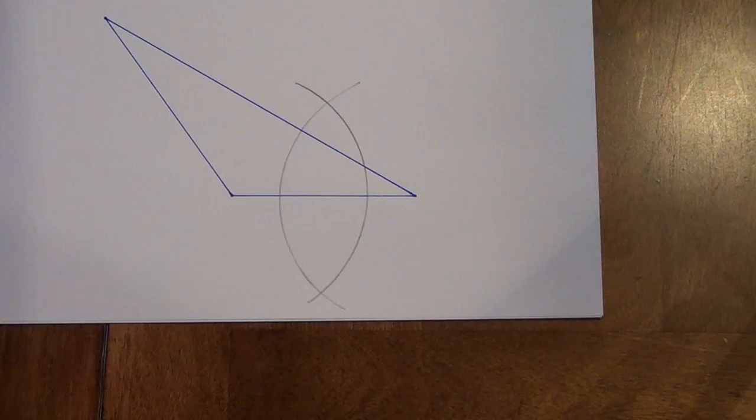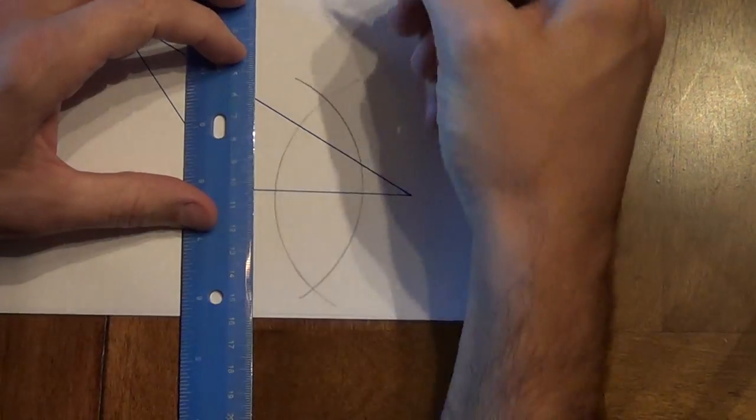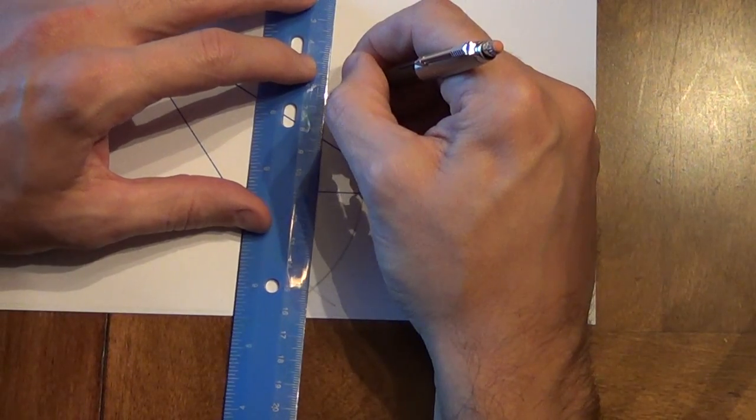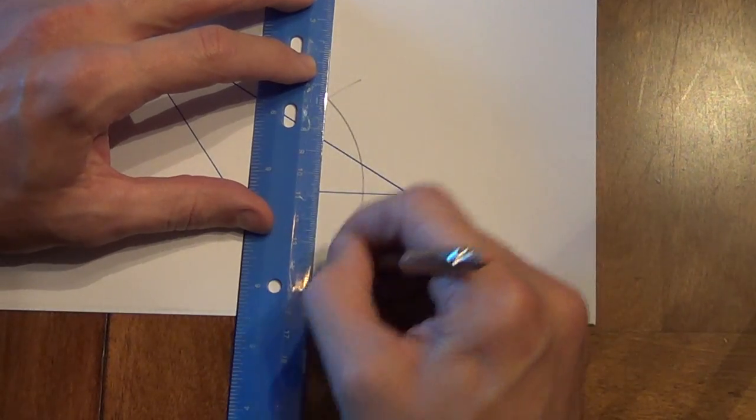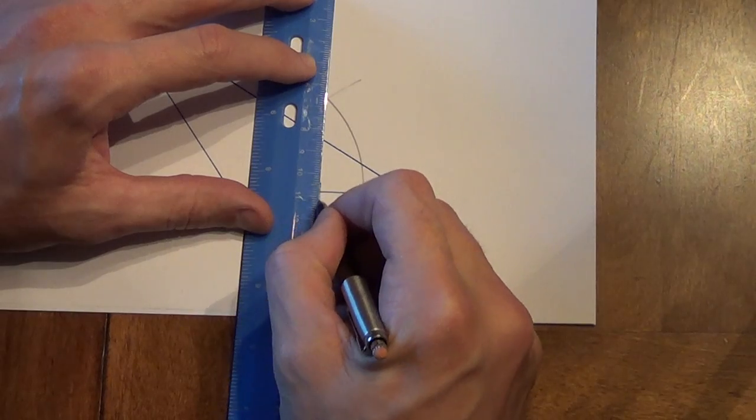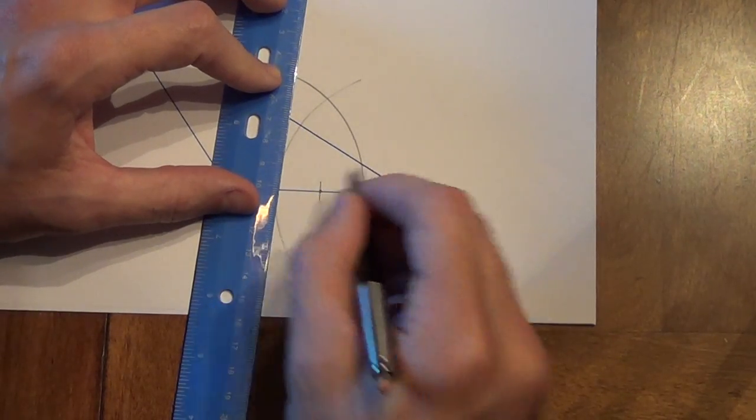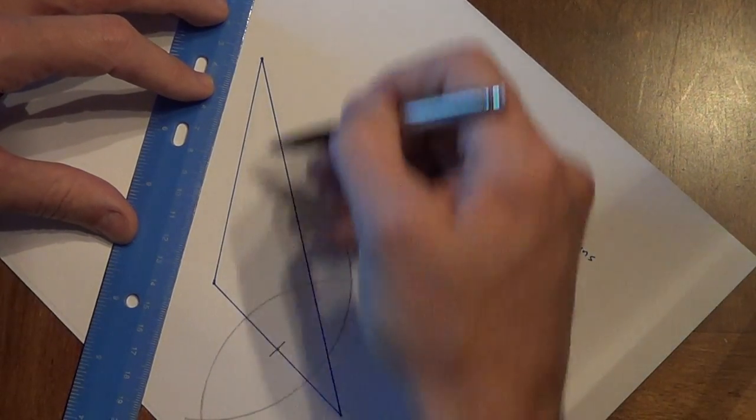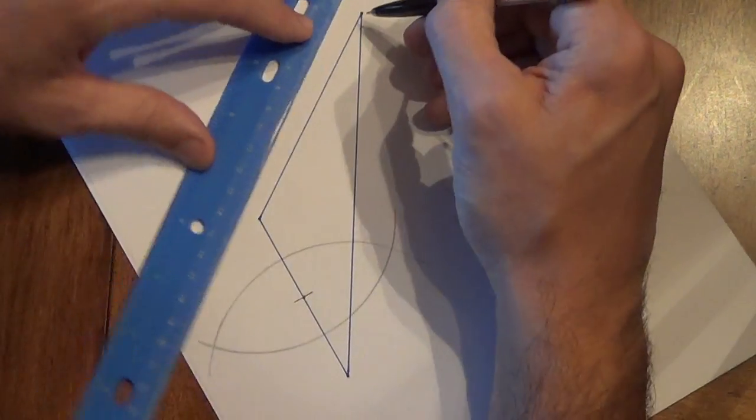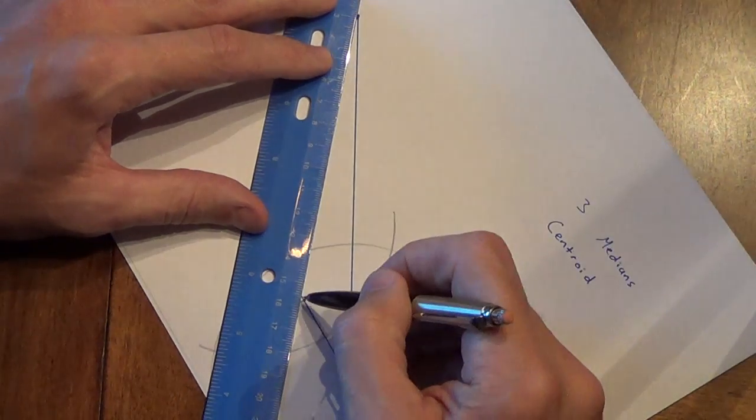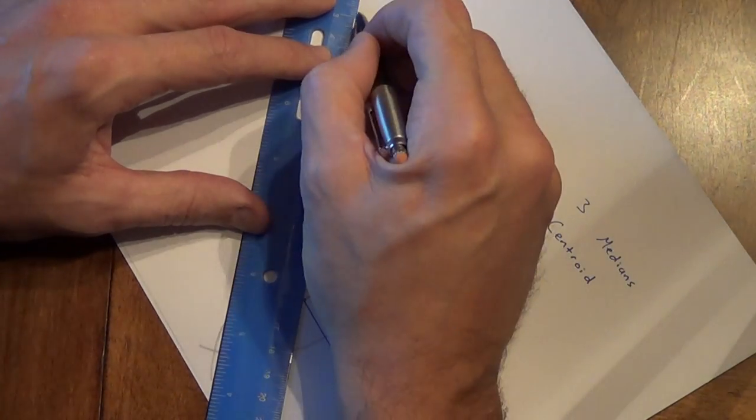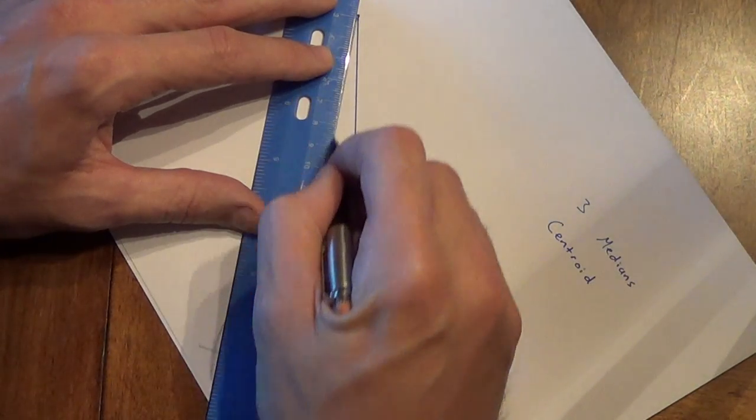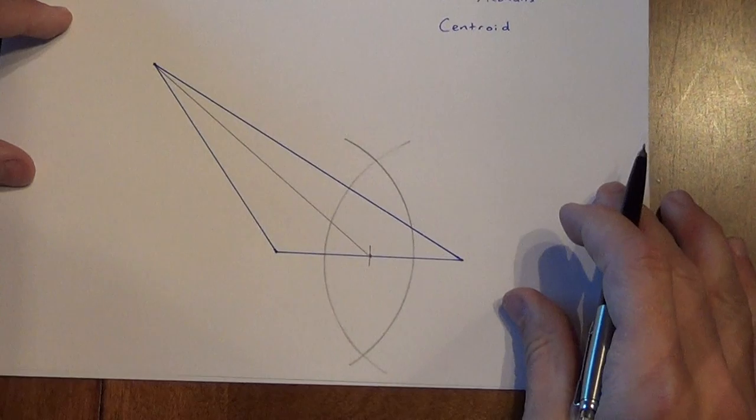Now, once again, just like when we did with mid-segments, we do not need to draw the whole perpendicular bisector. So all we need to do is line this up with this on our ruler, our straight edge. We just draw a little mark again, and this point right here is the midpoint. So now, remember, a median goes from a midpoint to the opposite vertex. So we're going to line this vertex up with this down here, and we're going to draw that long segment, and that is a median.